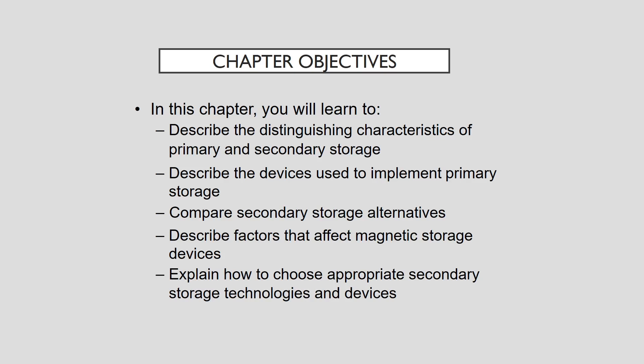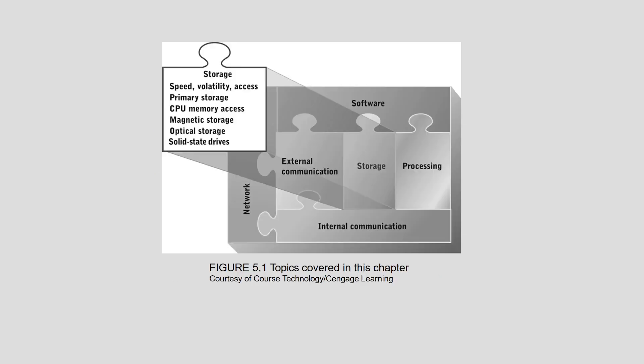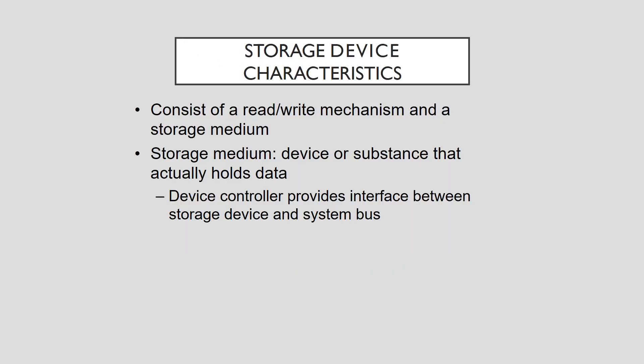This topic outlines the characteristics common to all storage devices and compares primary and secondary storage technologies. A storage device consists of a read or write mechanism and a storage medium. The storage medium is the device or substance that actually holds data. The read or write mechanism is the device used to read or write data to and from the storage medium. A device controller provides the interface between the storage device and the system bus.